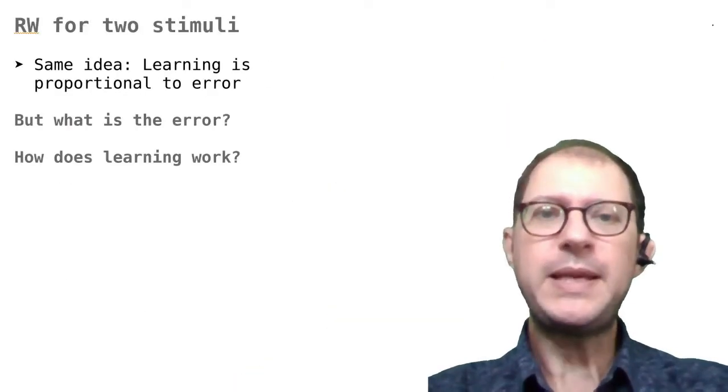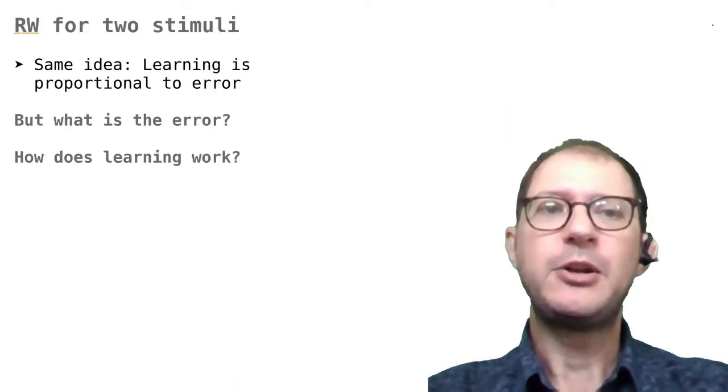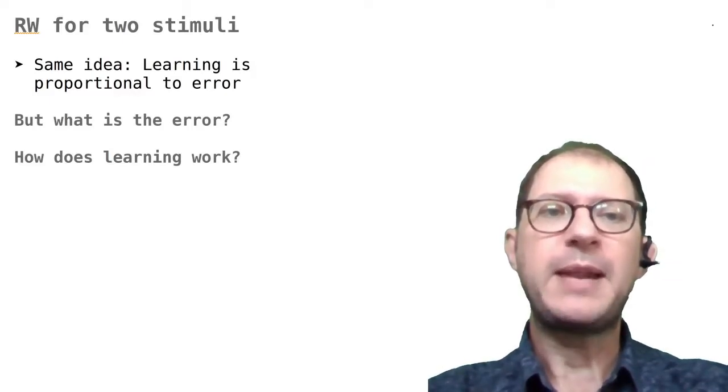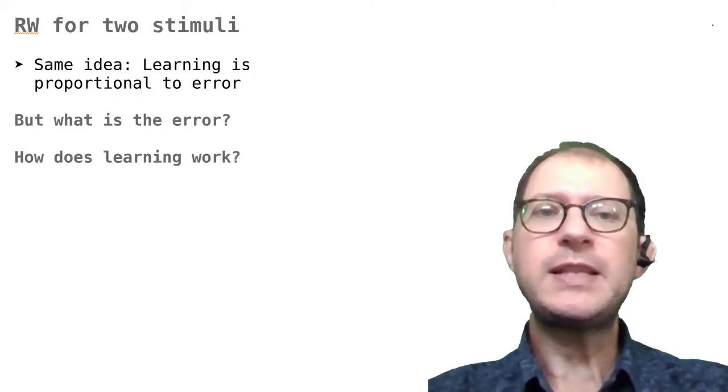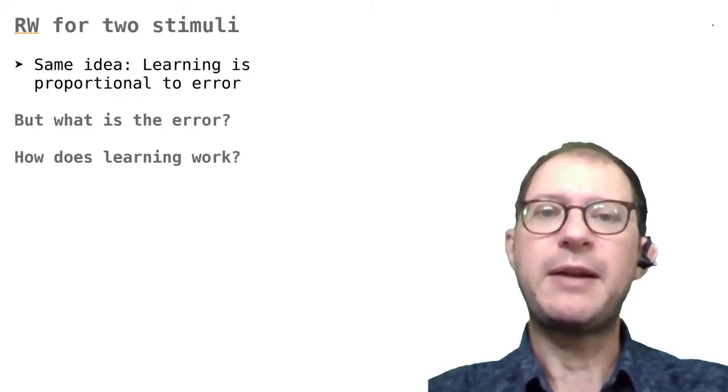In RW, the basic idea is always the same: learning about the two stimuli is proportional to the error that the animal perceives, and the task of learning is to get rid of this error. For this idea to work with two stimuli, we just have to update our definition of the error.